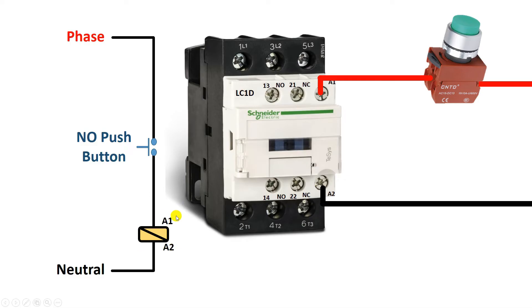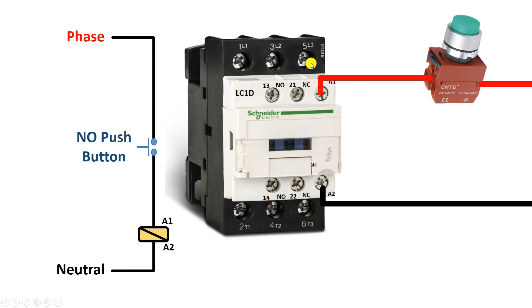After the contactor turns on or off, some changes occur inside it. When we provide power supply to the coil of contactor, the power terminals of the contactor get connected. In normal condition, when the contactor is off, power supply connected to L1 terminal will not go to T1 terminal. Similarly, power supply connected to L2 will not go to T2, and L3 will not go to T3. This means power supply will not pass through until the contactor is turned on. When you give power supply to the contactor coil, then power supply at the L terminals will start going to the T terminals — the contactor is turned on.